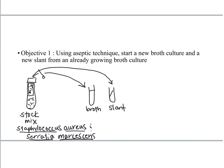Our first goal is to use aseptic technique. We're going to start a new broth culture and a new slant culture from an already growing broth culture. You will pick up a stock test tube and that stock is just going to be labeled mix. Remember the stock cultures, it's typed on a label and stuck on there.